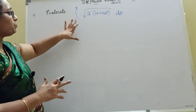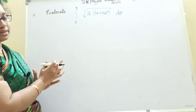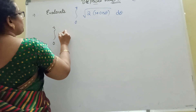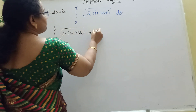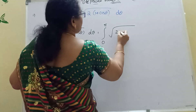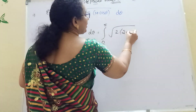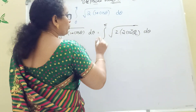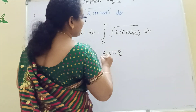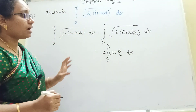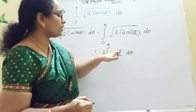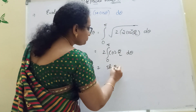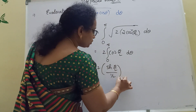Suppose the next problem: integration from 0 to pi of root of 2 into (1 plus cos theta) d theta. We apply the formula: 1 plus cos theta equals 2 cos squared(theta by 2). So the integrand becomes root of 2 into 2 cos squared(theta by 2) d theta. The root and the 2 cancel, leaving 2 cos(theta by 2). Integrating cos(theta by 2) gives sin(theta by 2), and with the 1/2 factor from the chain rule, we get 4 sin(theta by 2) with limits 0 to pi.